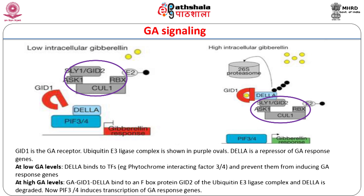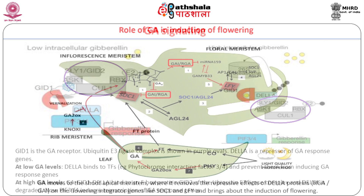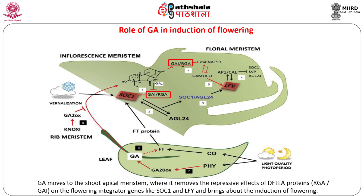The freed transcription factors PIF3 and PIF4 are now able to bind to the promoter of GA response genes and bring about their transcription. Besides PIFs that regulate responses like germination and photomorphogenesis, GA also regulates the activity of other transcription factors involved in plant growth and development. Let us study the role of GA in the important developmental process of flowering in more detail.